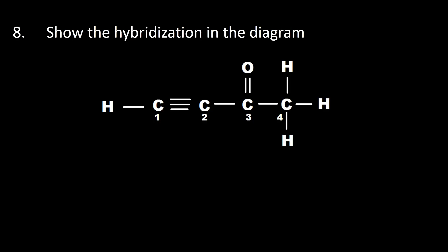Number eight: show the hybridization in the diagram. You can see this diagram where the carbons are labeled 1, 2, 3, and 4. The answer is: the first carbon C1 is sp, C2 is sp, C3 is sp², and C4 is sp³.